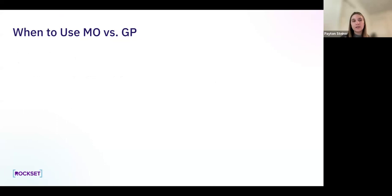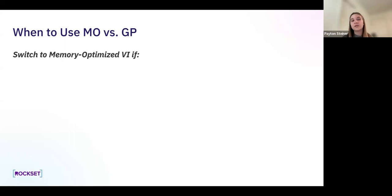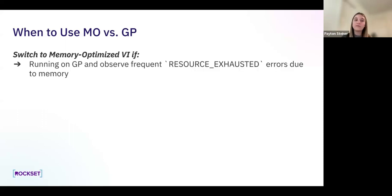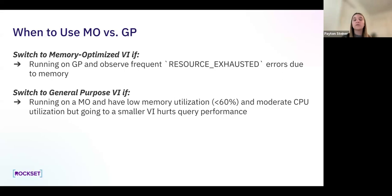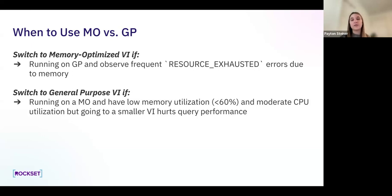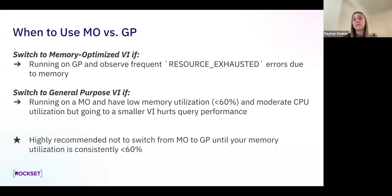You might want to switch to a memory optimized VI if you're running on general purpose and observing frequent resource exhausted errors due to memory, since memory optimized gives you more memory with the same compute. Conversely, consider switching to general purpose if you're on memory optimized with low memory utilization — around less than 60% — and moderate CPU utilization, but going to a smaller VI would hurt query performance. It's highly recommended that you don't switch from memory optimized to general purpose until your memory utilization is consistently around that less than 60% range.